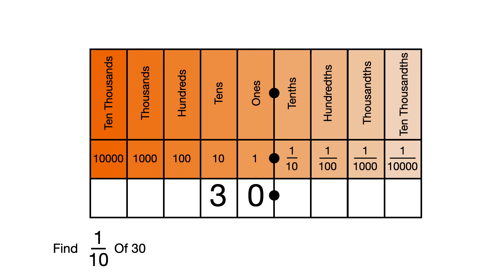Find 1 tenth of 30, which is the same as saying 30 divided by 10, which we can also write as 30 divided by 10.